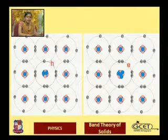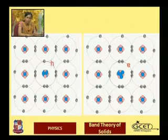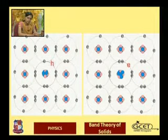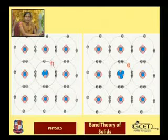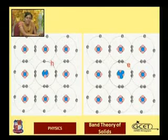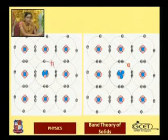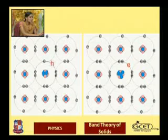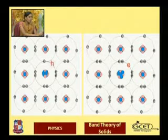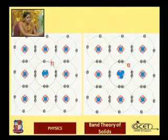When trivalent impurity is added, the fourth silicon atom will be waiting for an electron to complete its covalent bond. This creates a gap at a particular place — a vacancy that has the same mass as an electron but carries a positive charge. This is known as a hole.